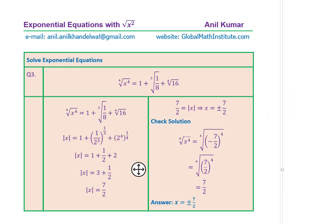Now let's look at the third question. This time we have the fourth root of x to the power of 4, plus the cube root of one over 8, plus the fourth root of 16. The fourth root of x to the fourth power is also an absolute value function — x could be negative because when you raise it to the fourth power you get a positive number. So the fourth root of x to the fourth is the absolute value of x.